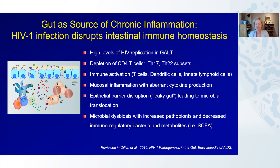Chronic inflammation is a key feature of HIV pathogenesis, and the gut is clearly an important source of this inflammation. HIV infection disrupts intestinal immune homeostasis via a number of different mechanisms. First, HIV replicates to very high levels in gut-associated lymphoid tissue in early HIV infection, resulting in the infection and depletion of a large number of CD4 T cells, including Th17 and Th22 subsets. This results in immune activation of bystander cells, including other T cells, dendritic cells, and innate lymphoid cells, ultimately resulting in mucosal inflammation with aberrant cytokine production.